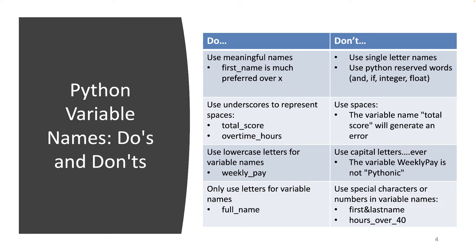Use underscores a lot in Python. There's a word called 'Pythonic' in Python, which means it's consistent with the spirit of how Python was meant to be used. Underscores are very important in Python variable names and are used to replace spaces. Do not use spaces in variable names — if you use a space, it will explicitly generate an error. For example, 'total space score' as a variable name will not be considered a single variable by Python, and you will get an error.